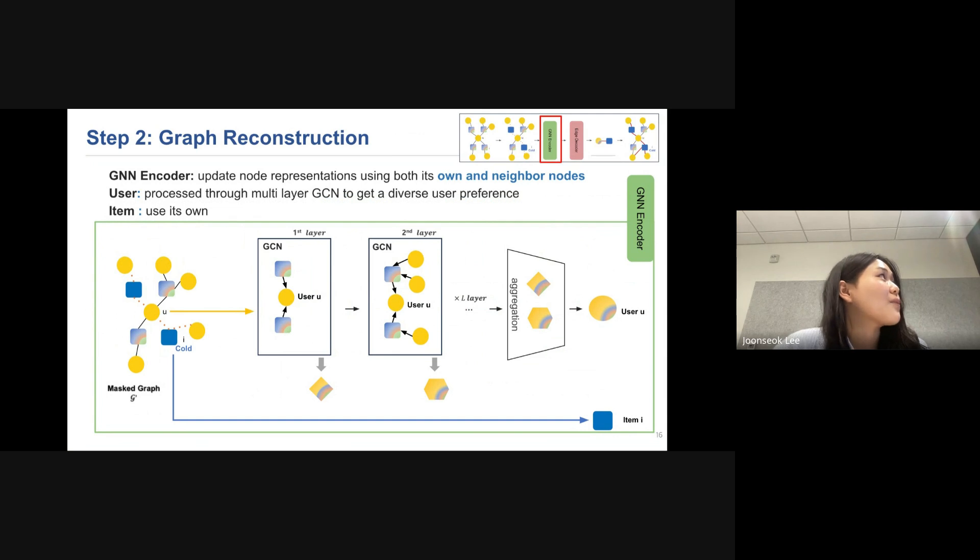So I'll talk about the GNN encoder in detail. GNN encoder updates node representation using both its own and neighbor nodes. And for users, we process through multi-layer GCN to get diverse user preferences. Then the user representations from each layer will be aggregated using aggregation layer to produce final user embedding. However, to handle the cold items, the final item embedding is itself.